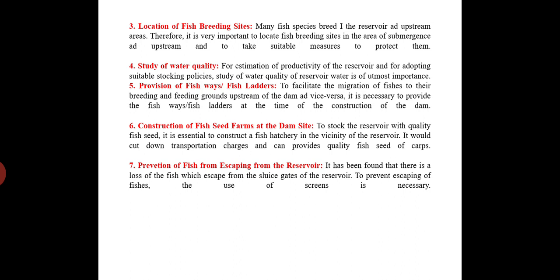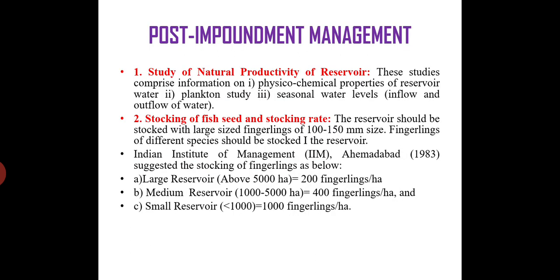To stock the reservoir with quality fish seed, it is essential to construct a fish hatchery in the vicinity of the reservoir, which would cut down transportation charges and provide quality fish seed of carps. Additionally, there is loss of fish through sluices of the reservoir, so the use of screens is necessary to prevent fish from escaping.